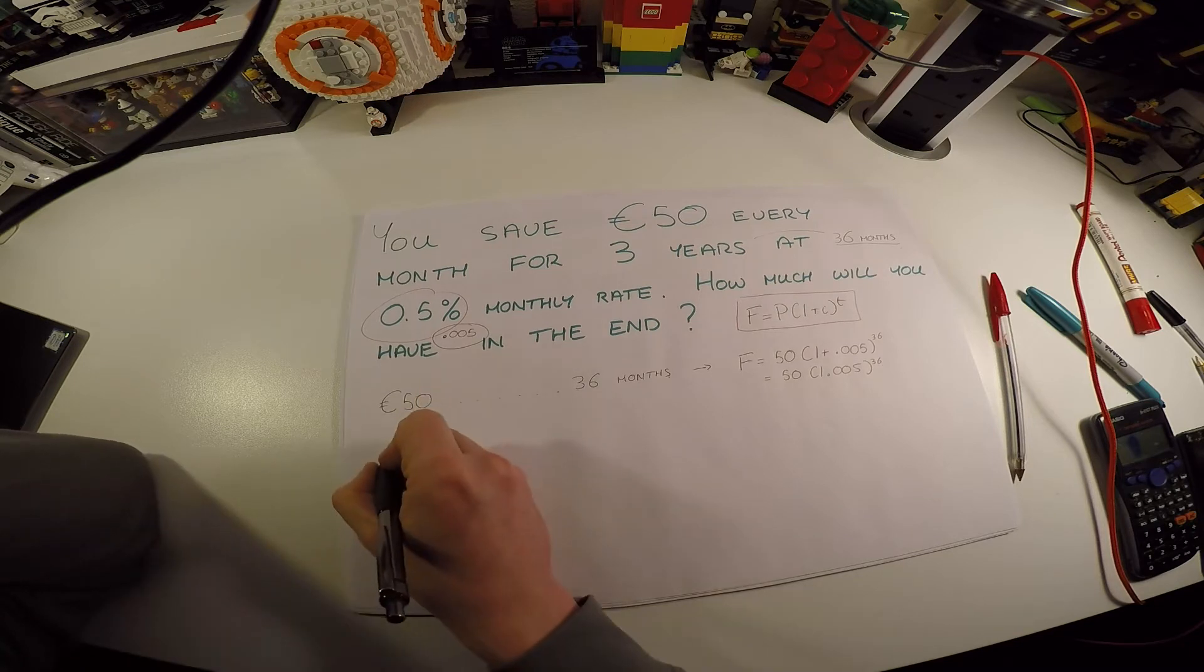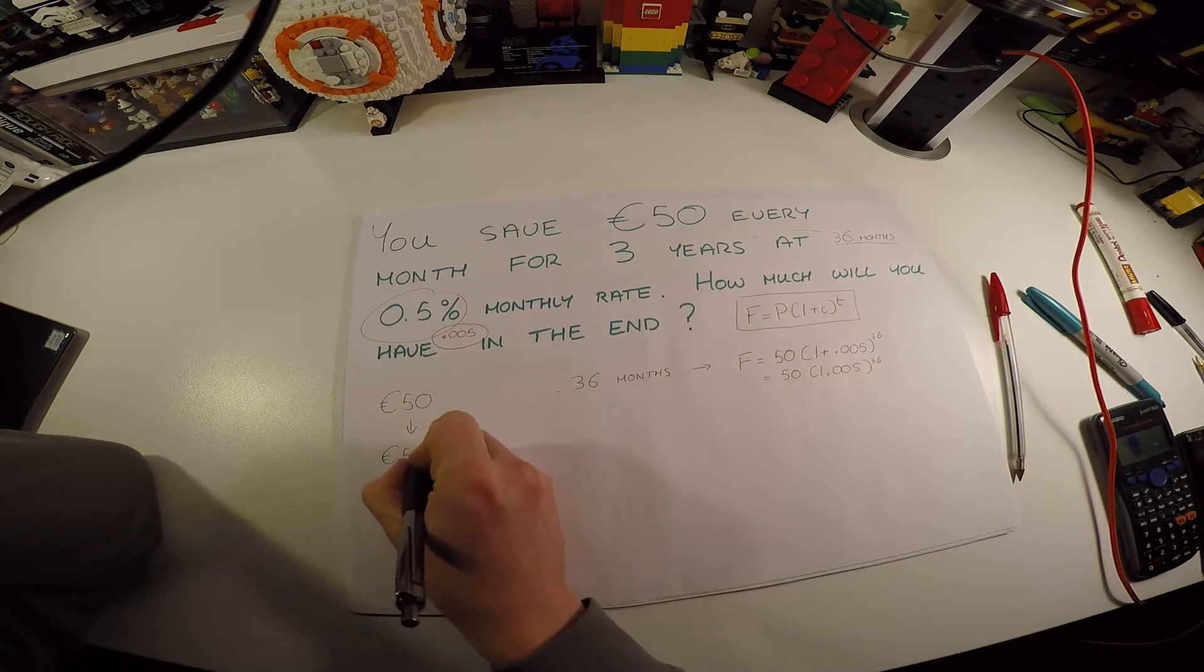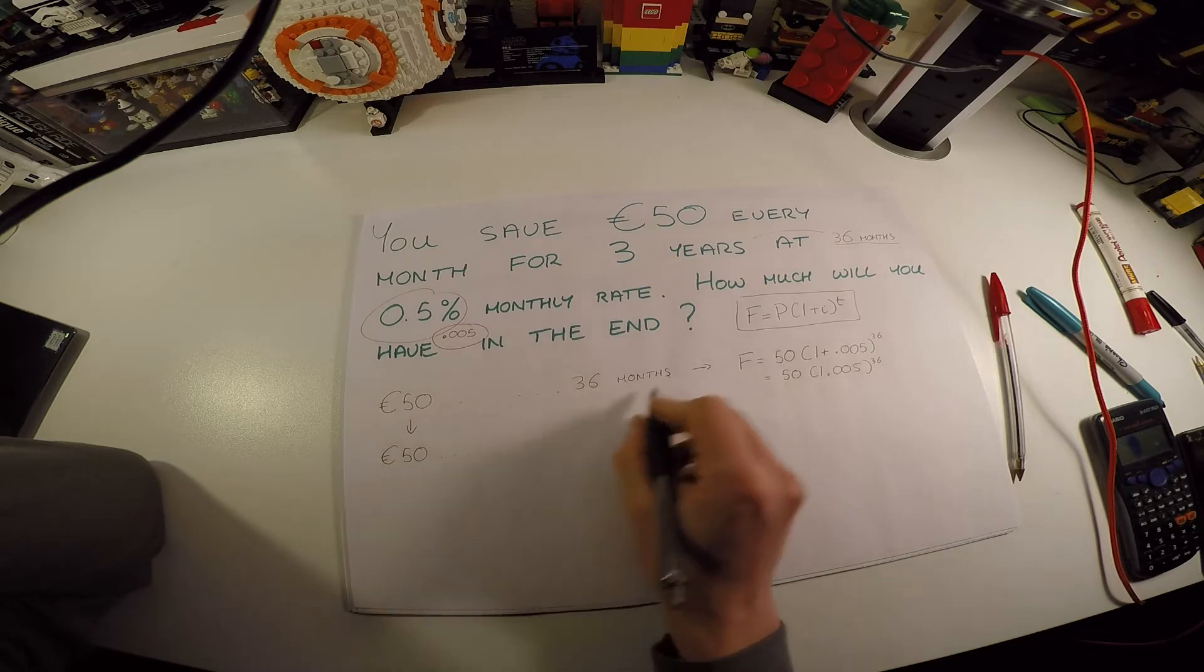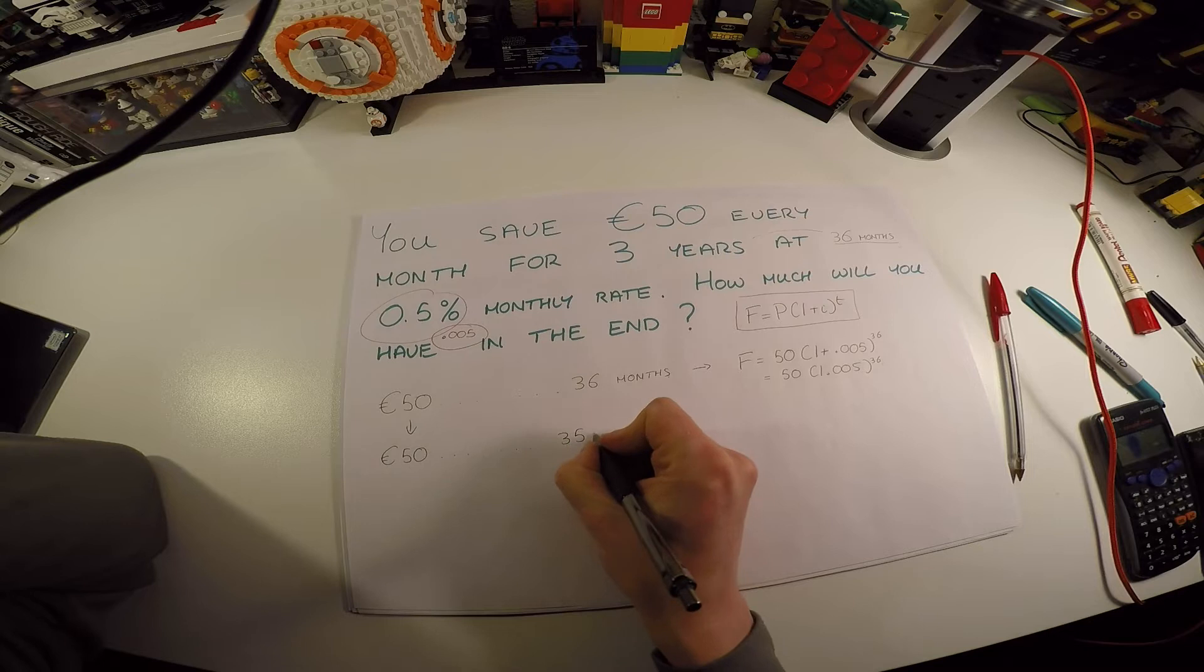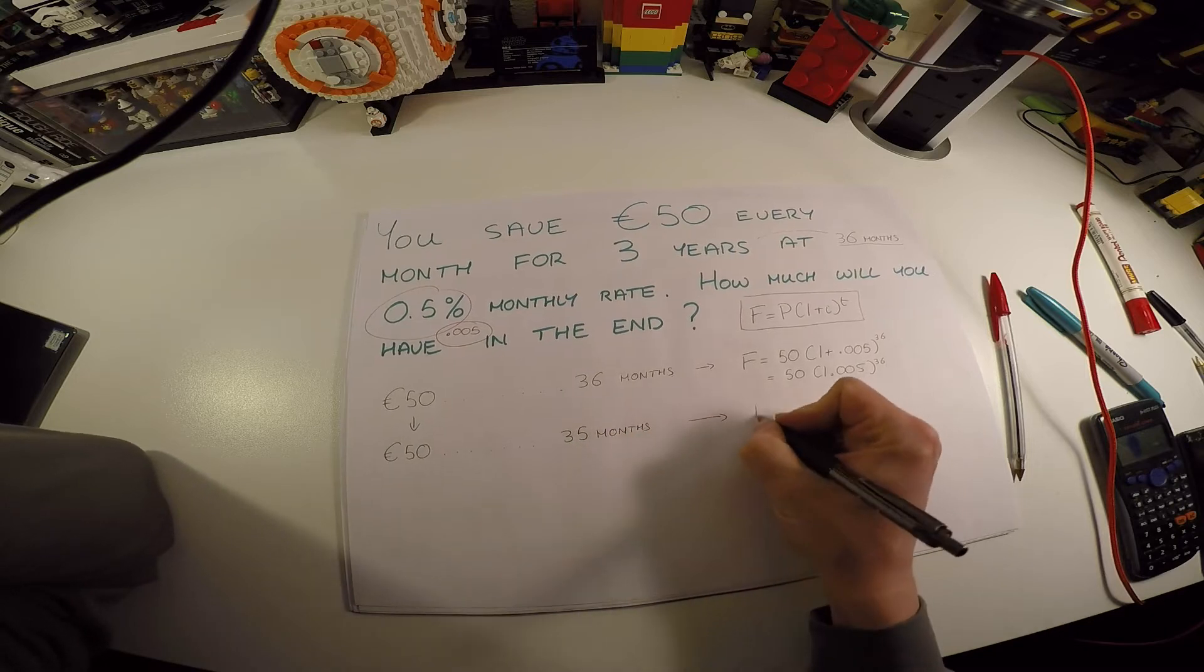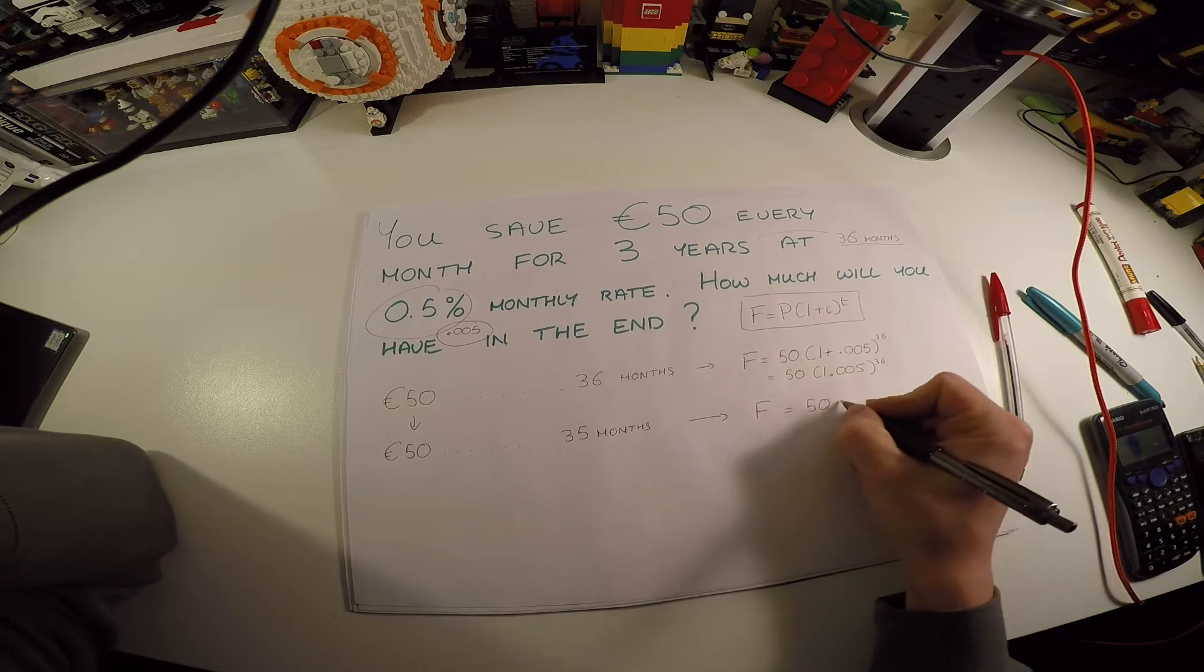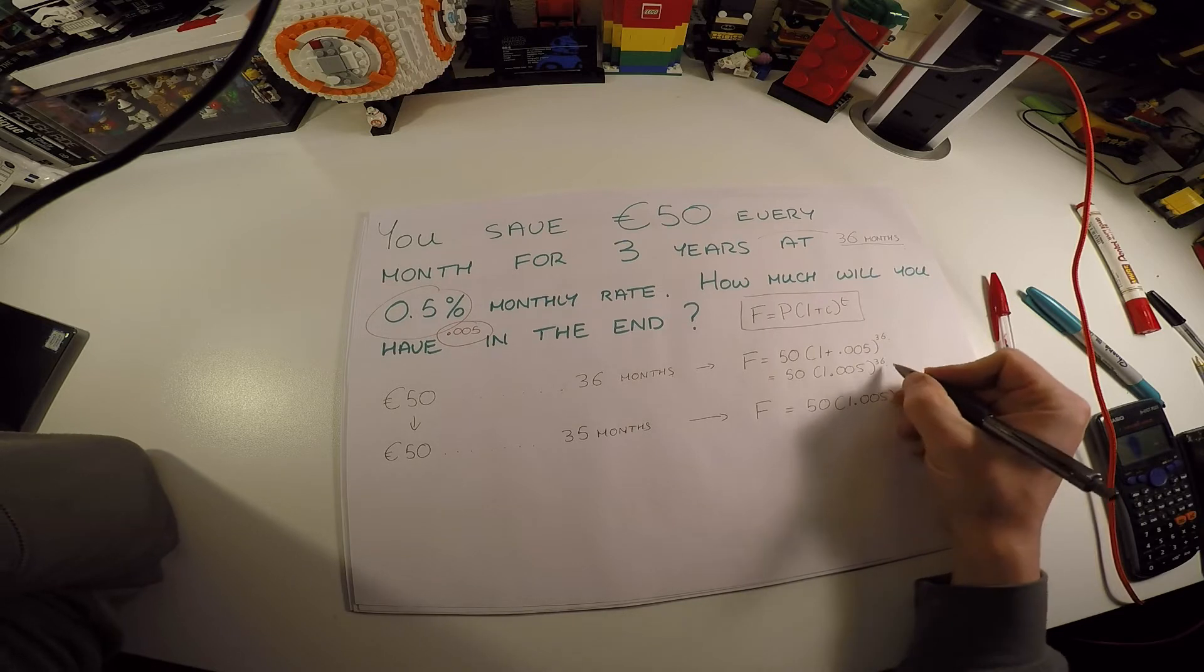The next payment of 50 euros, how long is that going to be in there? It's going to be in there for quite a while but not quite as long as the first payment. It's going to be in there for 35 months. That means it will have a final value of 50 times 1 plus the same interest rate, but it's not going to be in there for 36 months, it's going to be in there for 35 months.